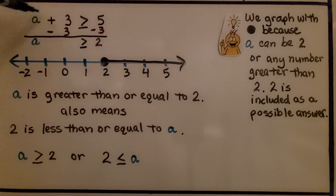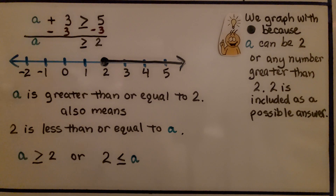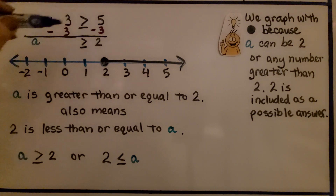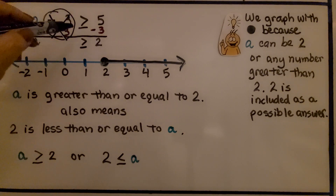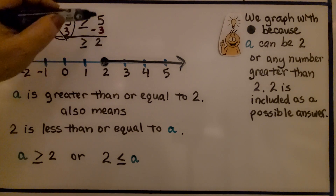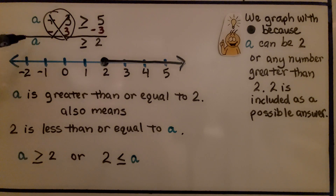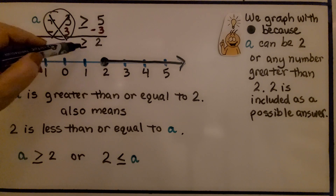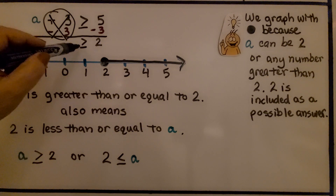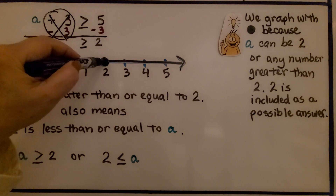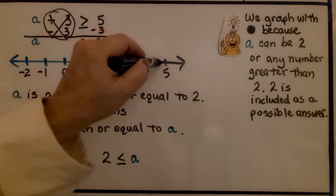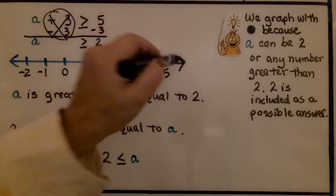Here we have a plus 3 is greater than or equal to 5. We use the subtraction property of inequality and do minus 3 on each side to get rid of the plus 3. That gives us 2 on the right side — 5 minus 3 is 2. So a is greater than or equal to 2. Because it has 'or equal to,' we fill in the circle since it might be 2, and we shade and draw the arrow to the right.